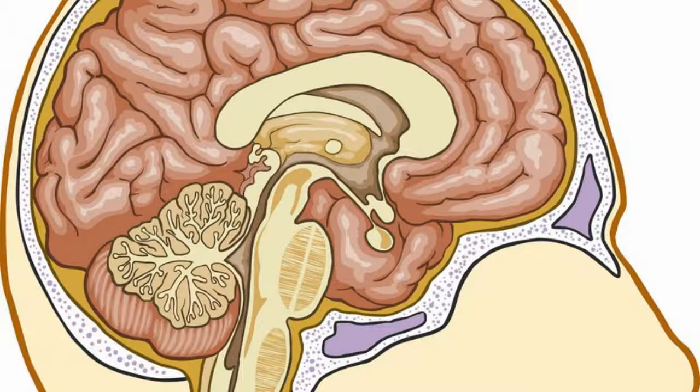Both thalamus and hypothalamus are found close to the midline at the base of the cerebrum.